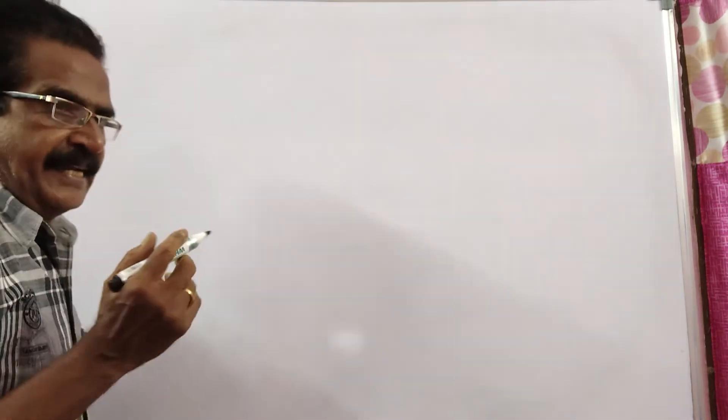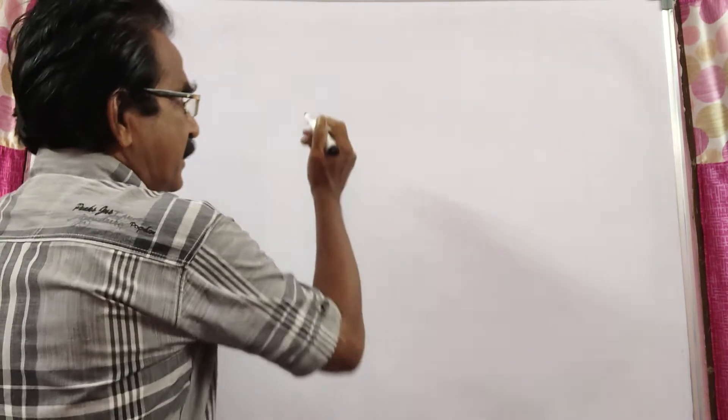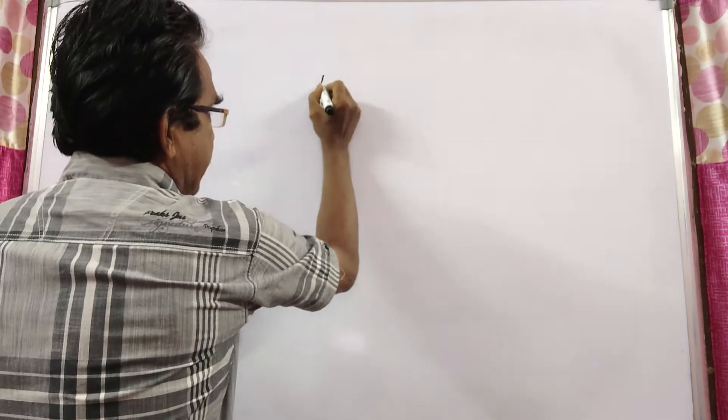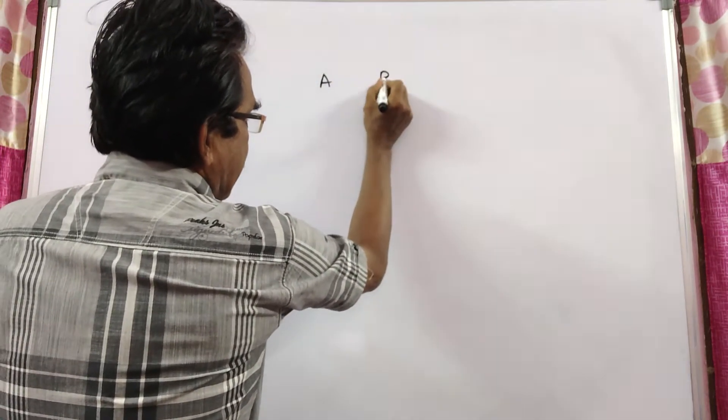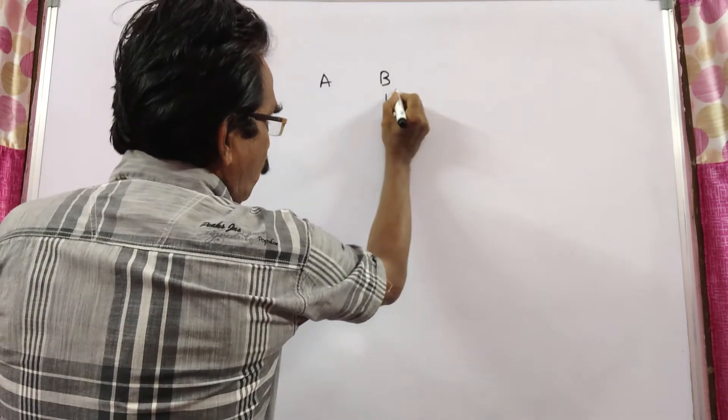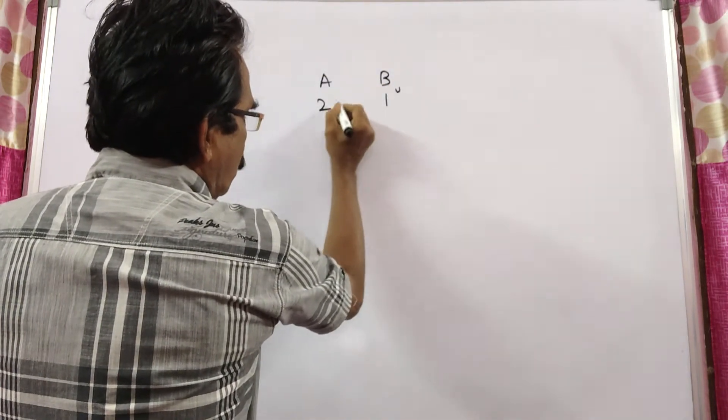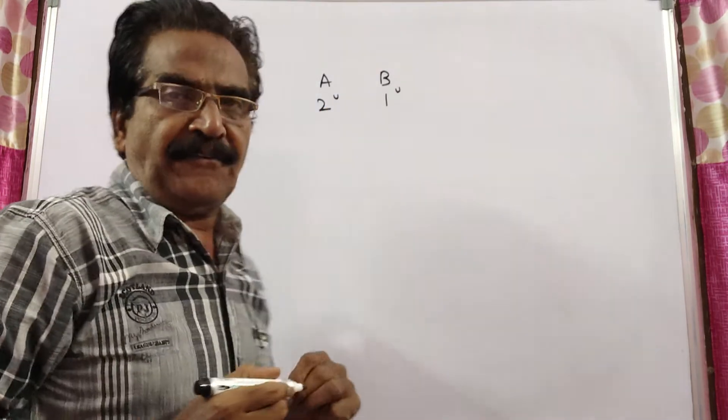Question is given in the description box also. See friends, A is twice as much efficient as B. That means, if B can do 1 unit of work, A can do 2 units of work.